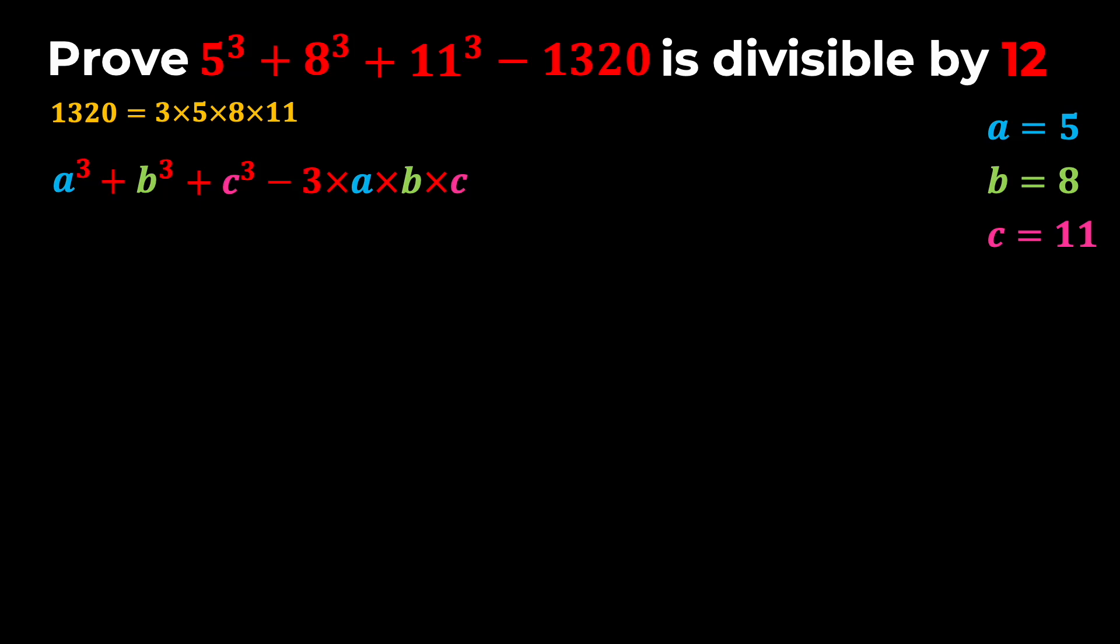To do that, I'm going to factor this expression out, and to do that, first of all, I'm going to add and subtract the expressions 3A squared times B and 3B squared times A.